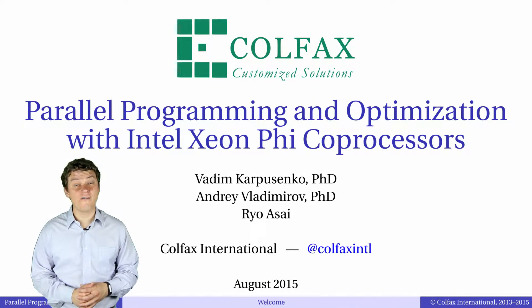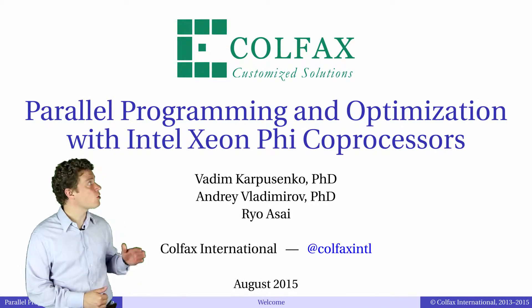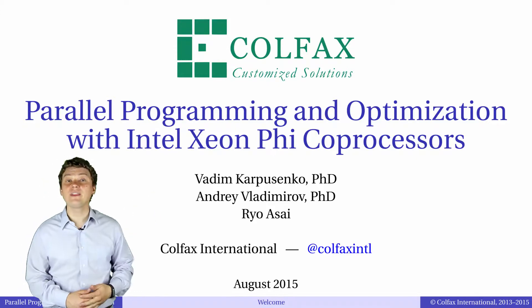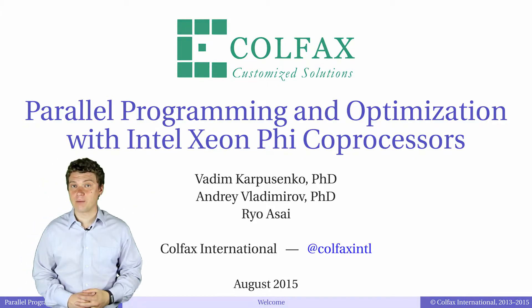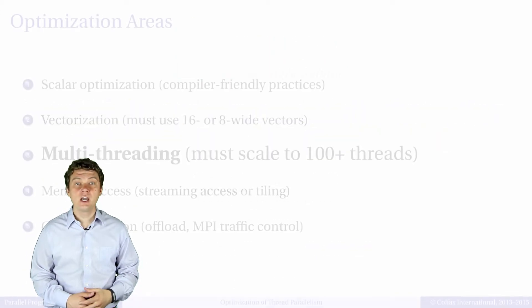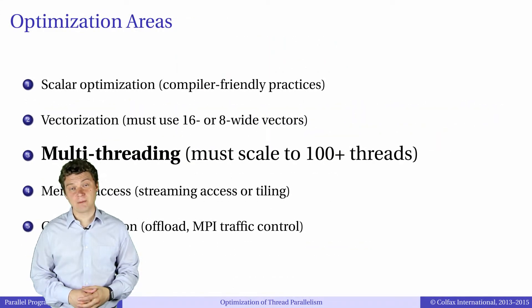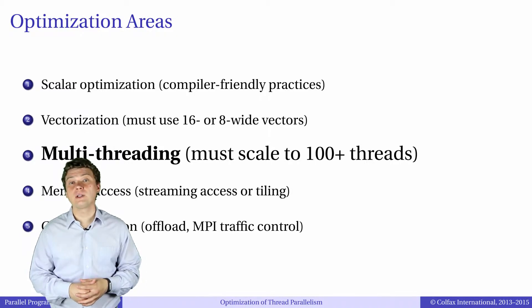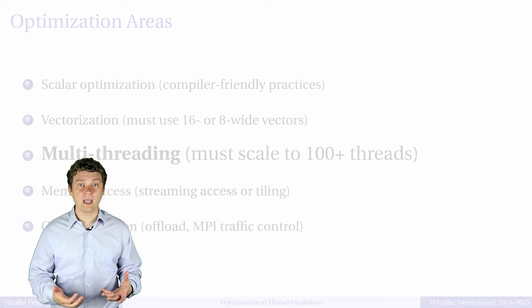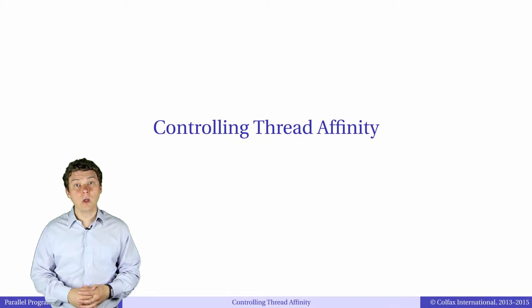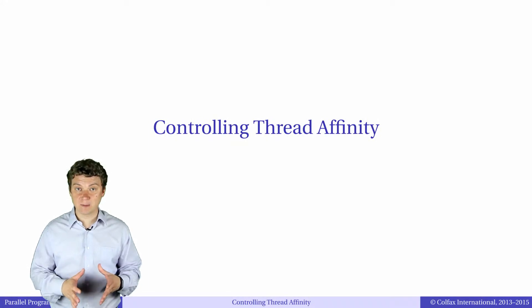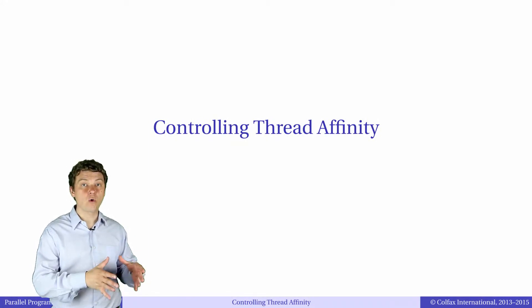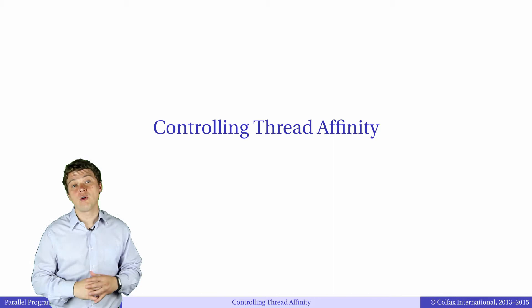Welcome back to episode 5.11 of our video course Parallel Programming and Optimization with Intel Xeon Phi Processors. We're continuing the discussion of optimization of multi-threaded applications. In this episode we will talk about improving application performance by proper logical thread placement relative to physical threads, cores, sockets, and so on.